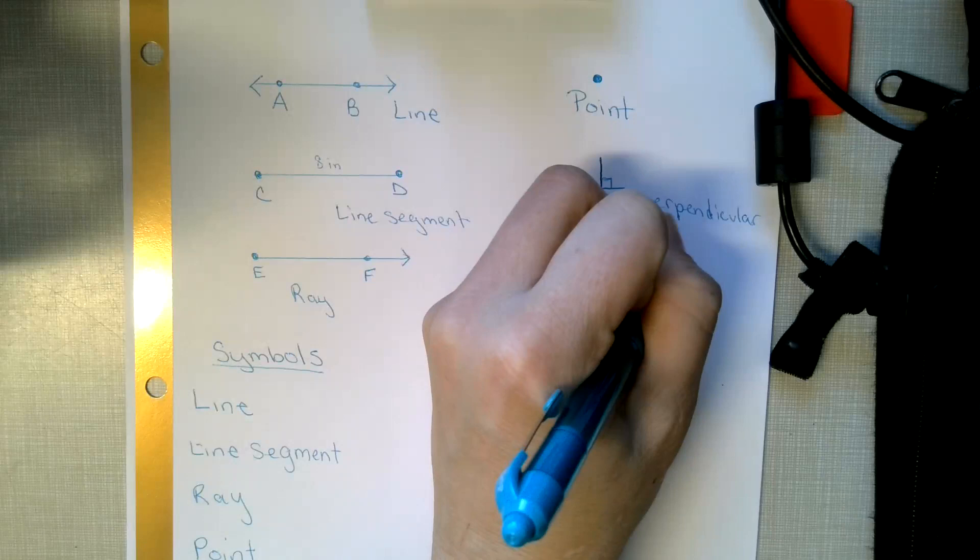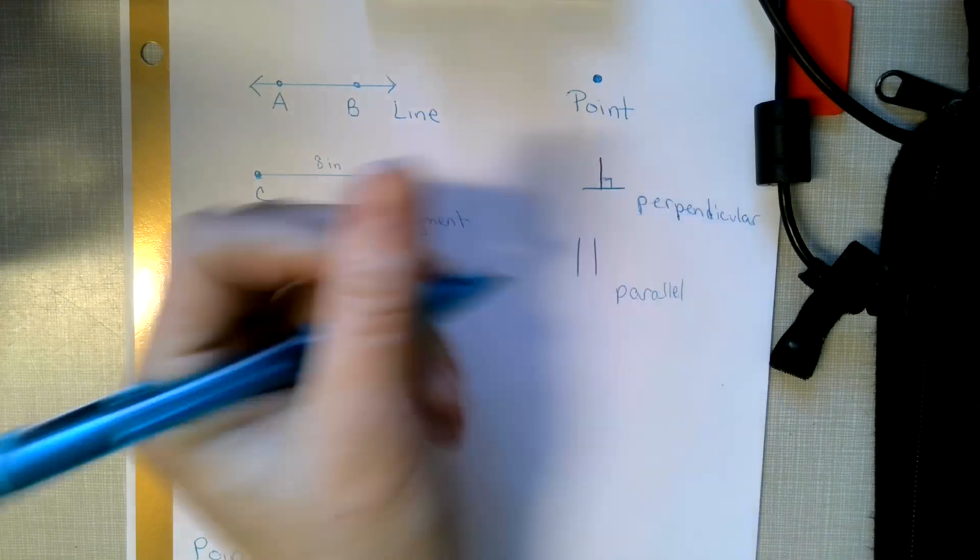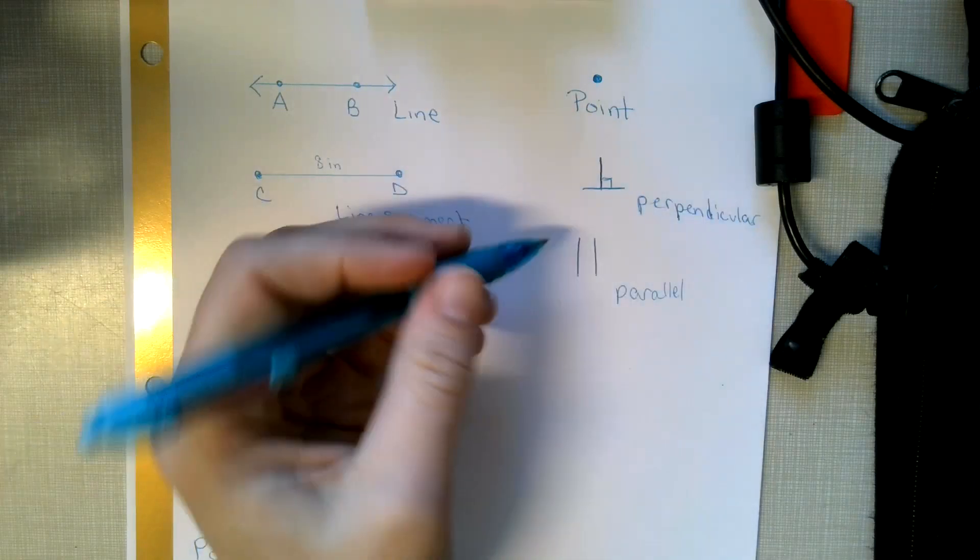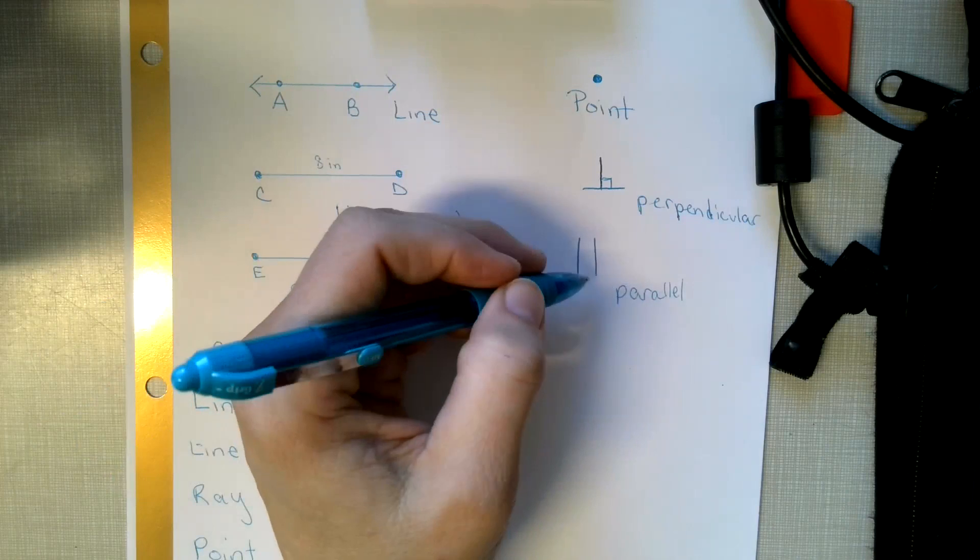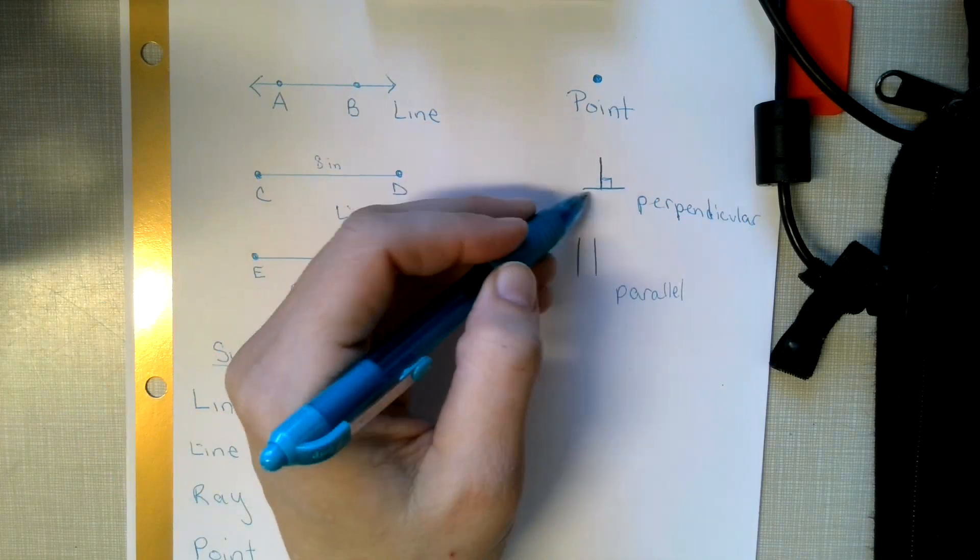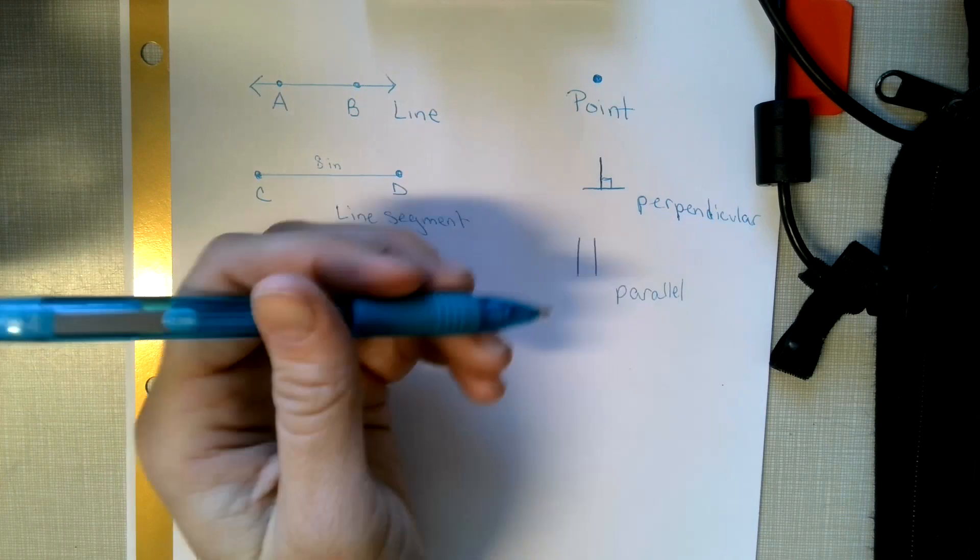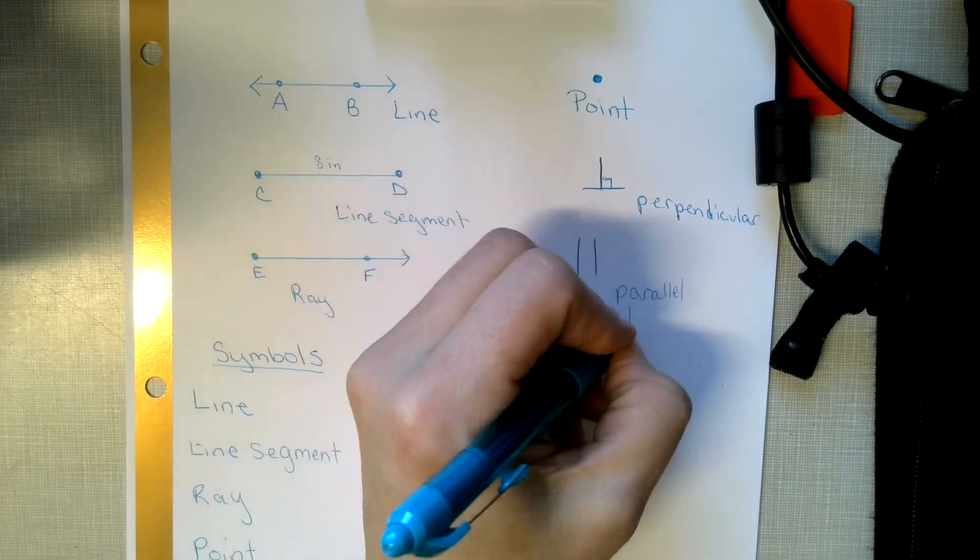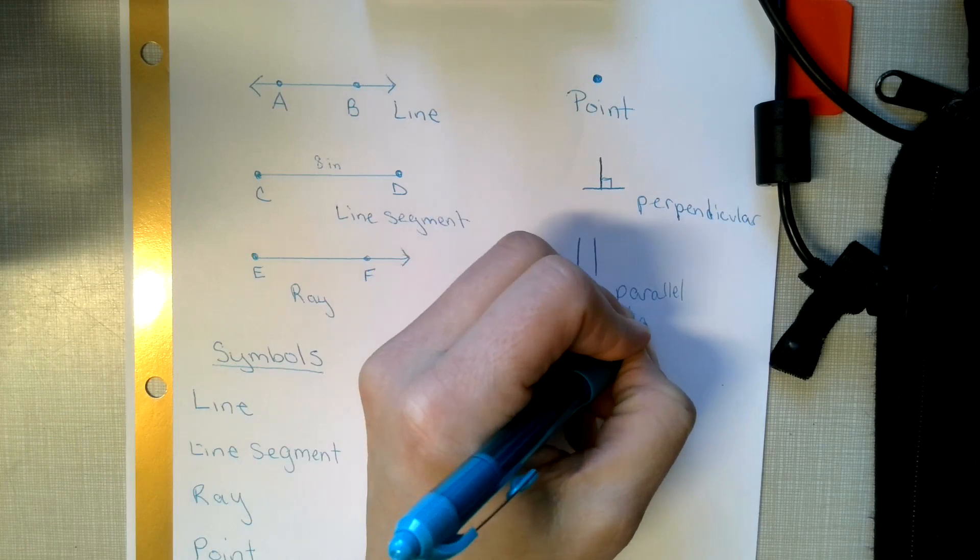These are parallel. Parallel lines never intersect. They just keep going. It's kind of like a road. Eventually a road comes to a stop and has an intersection like a perpendicular does. So these are parallel lines. They are parallel.